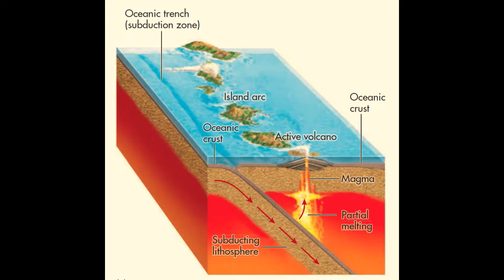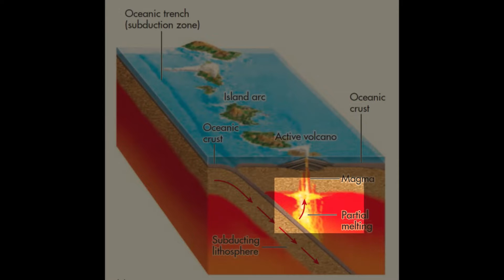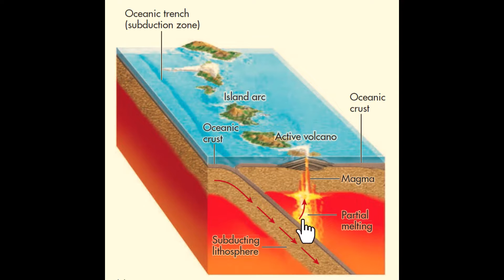As the plate subducts, its temperature increases, releasing water from minerals in the down-going plate. This water causes melting in the overlying asthenosphere, and the resulting magma rises into the overlying plate. Some magma erupts initially under the ocean and later as dangerous explosive volcanoes that rise above the sea.